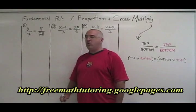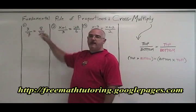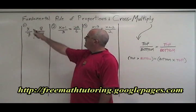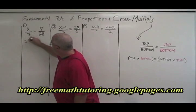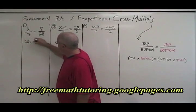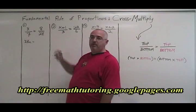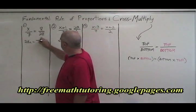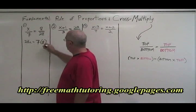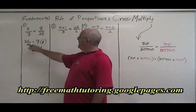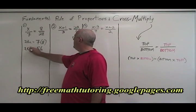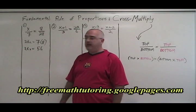In example one, we have a simple proportion with a single variable. Top times bottom means x times 28. We write 28x equals bottom times top means 7 times 8. 7 times 8 is 56. So we have 28x equals 56.